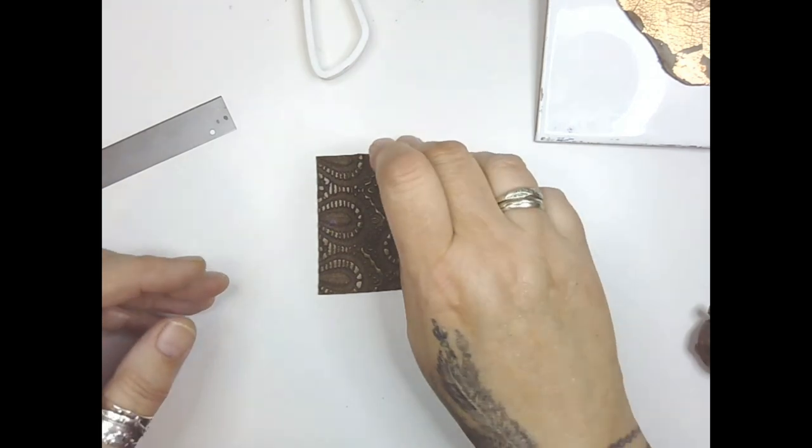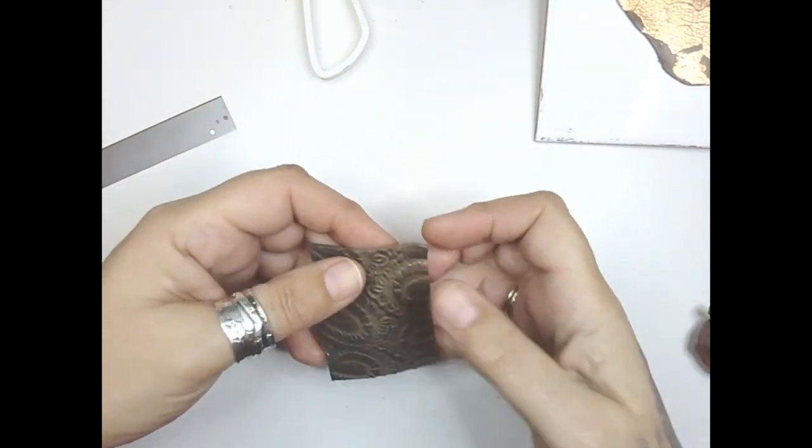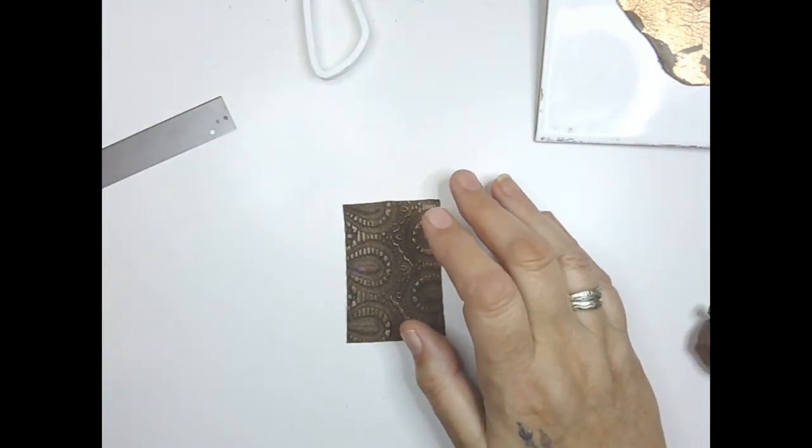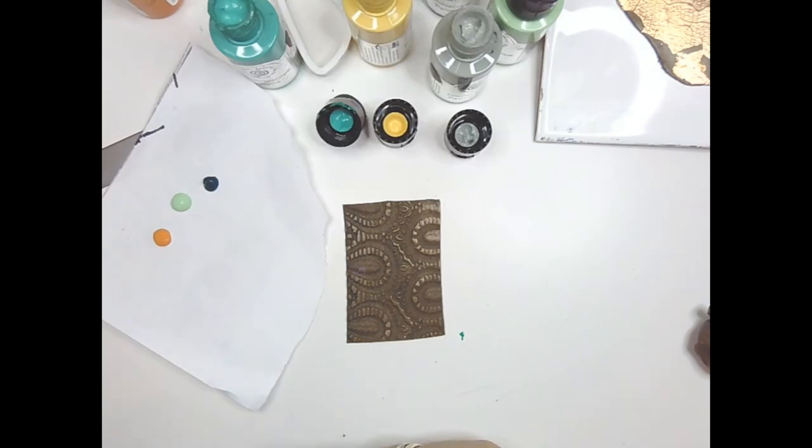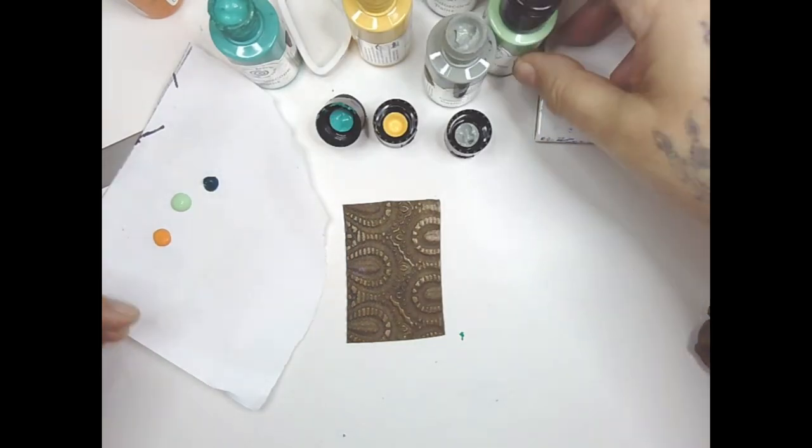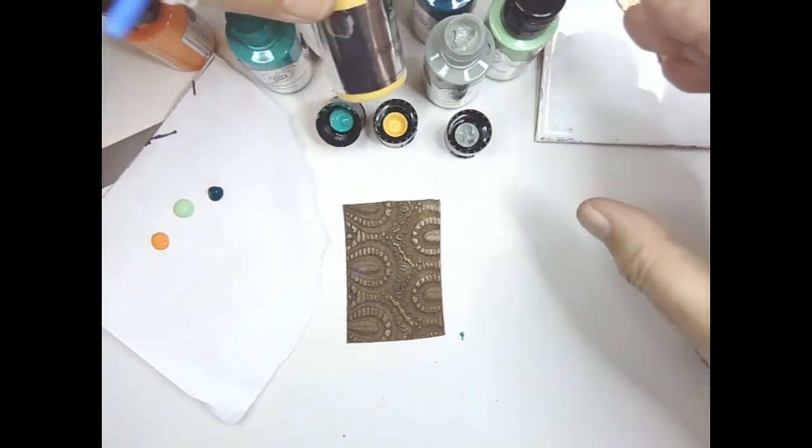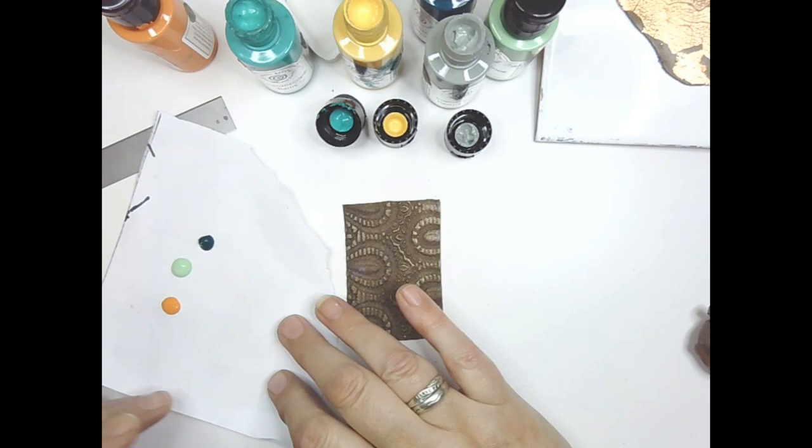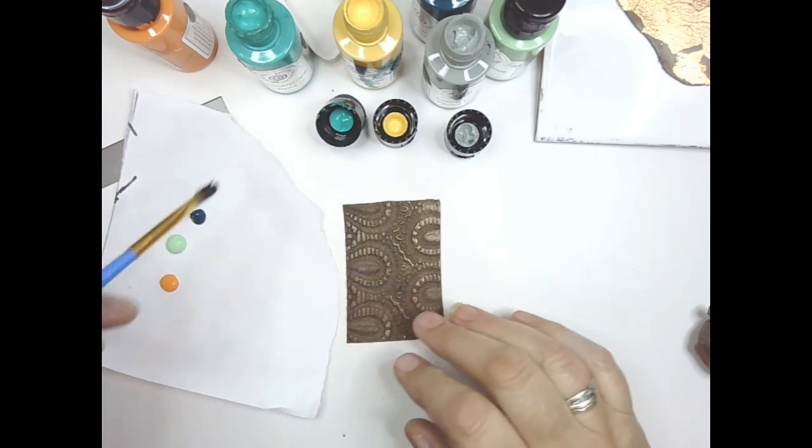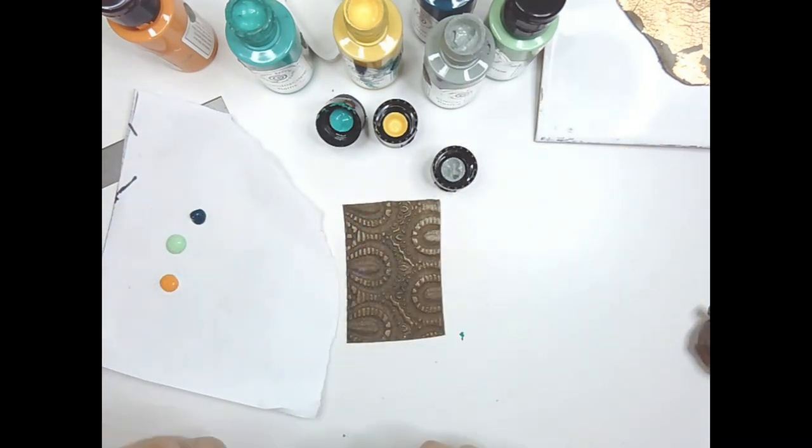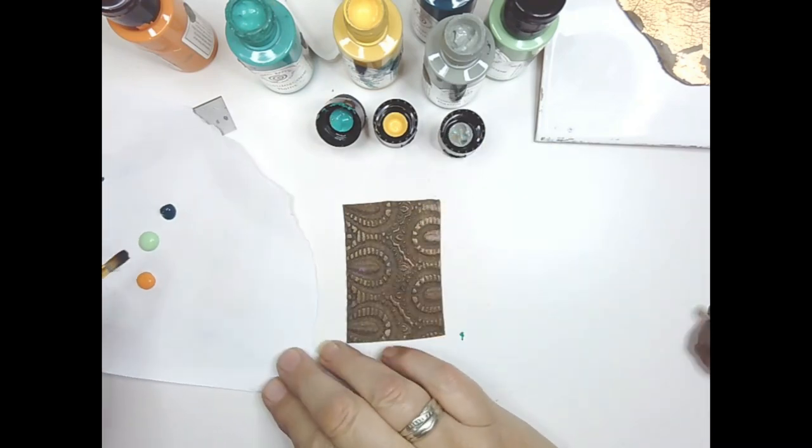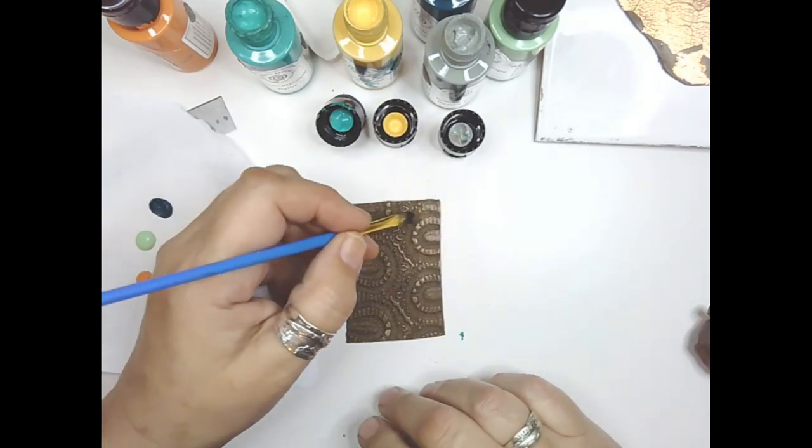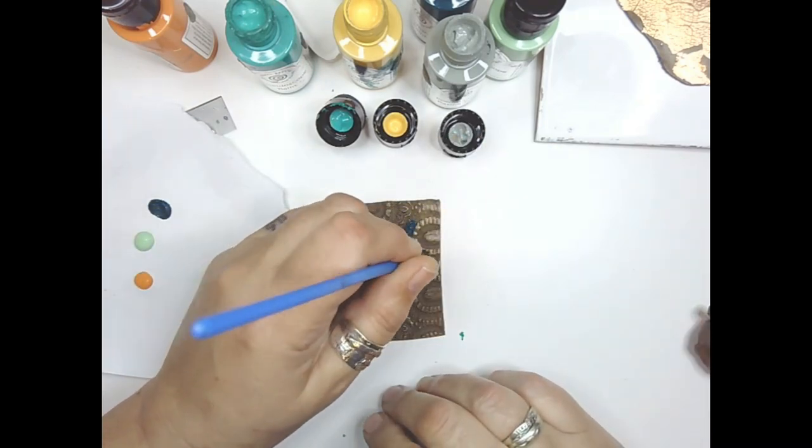Now I want to pretty this up with these kaleidoscope paints. I've got an array of colors here - they're all greens, orange, solar flare. I'm using the lids and I'm just literally going to paint this up in a pretty pattern, so I'm just going to start adding the paint randomly.